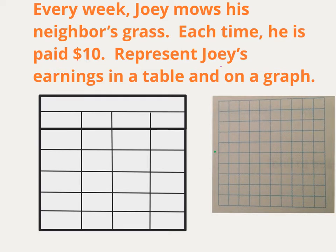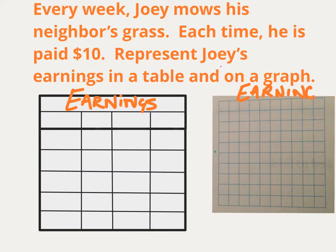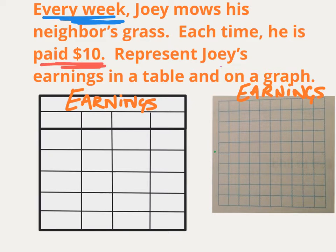Every week, Joey mows his neighbor's grass. Each time, he's paid $10. Represent Joey's earnings in a table and on a graph. So let's give our table and graph a title. We know he mows every week, and when he mows he's paid $10. Our input data is all the times he mows, and our output data is all the money he gets when he mows. First he has to mow, then he gets paid. So we can title the input 'mows' and the output 'money.'